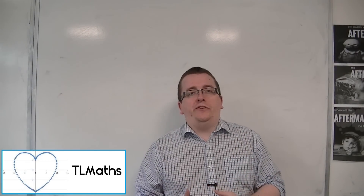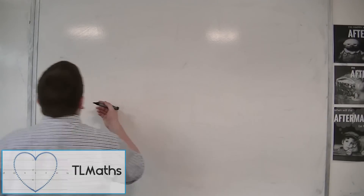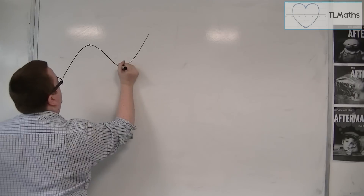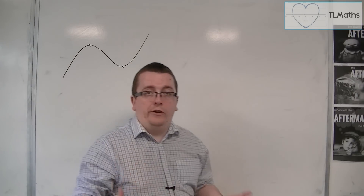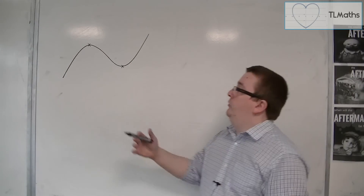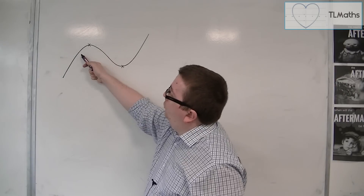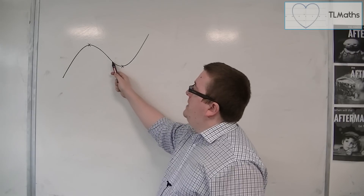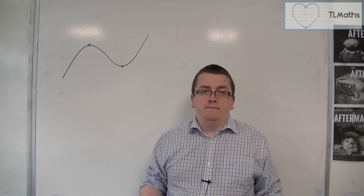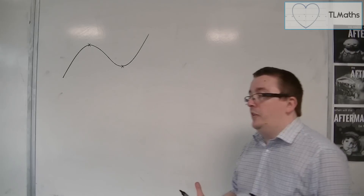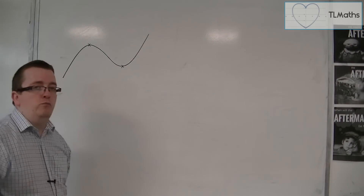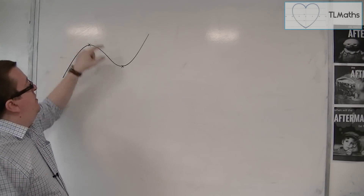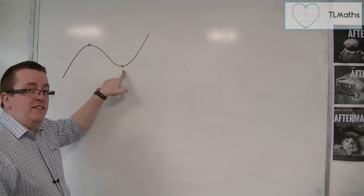In the video where I first introduced stationary points, we had a curve that looked like this. And clearly, where there were stationary points, these must be two different types. Because ultimately, this point is where the curve is going from a positive gradient to a negative gradient, and this point is where it's going from a negative gradient to a positive gradient. And there was a difference here, because if I was solving a problem like an optimisation problem, then this is where the curve is at a maximum, and that is where the curve is at a minimum.